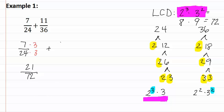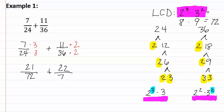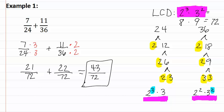Let's see this again with the second fraction. We have eleven thirty-sixths, and we have to figure out what we need to multiply it by to give us seventy-two. Once again, we look at the least common denominator's prime factorization and compare it to that of the number's prime factorization. As you can see, there's one more two, but there's the same number of threes. That means we're missing a two. We now get twenty-two over seventy-two. Our denominators match, so we can now add. Twenty-one plus twenty-two is forty-three seventy-seconds. Remember, when adding fractions, you do not change the denominators.